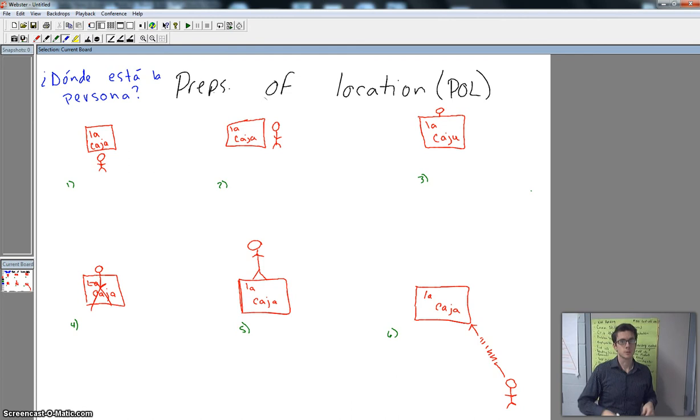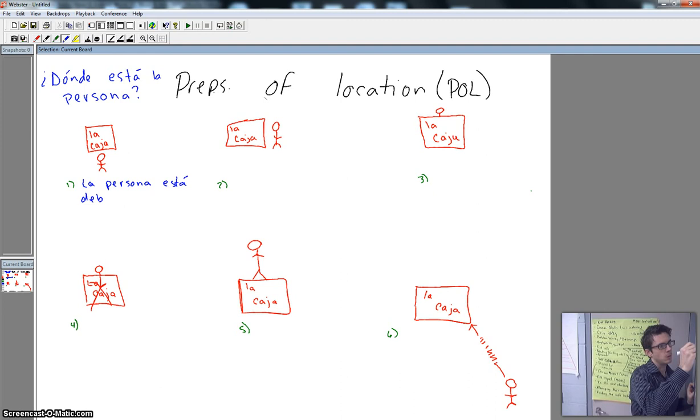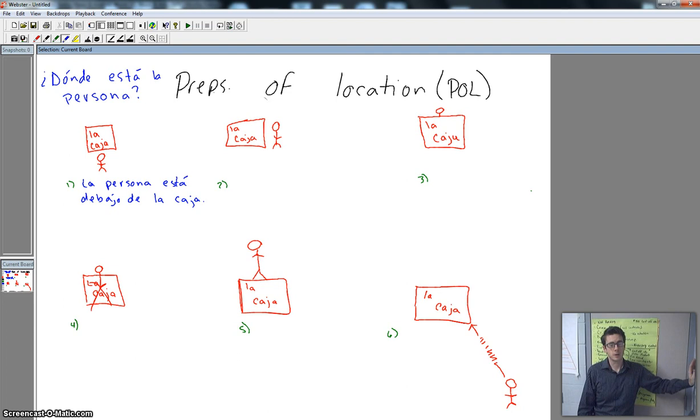We've got the first person right here. You see the box is over him. So our question is, ¿Dónde está la persona? So we need to give the location of the person in relation to the box. So think about it. Take a look. The person is under. Yeah, so la persona está debajo, debajo de la caja. La persona está debajo de la caja. Take a look. Think about it in English. Our person is under the box, is below the box. La persona está debajo de la caja. Very good.